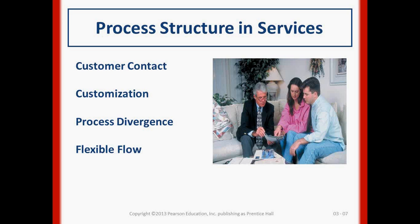There are a couple of process structures in services. You can have high customer contact with customization — for example, selling insurance, homes, or financial services requires high customization and high customer contact. There is a lot of process divergence, meaning a process can take any path and the salesperson must go along with it, requiring high flexibility in the flow.